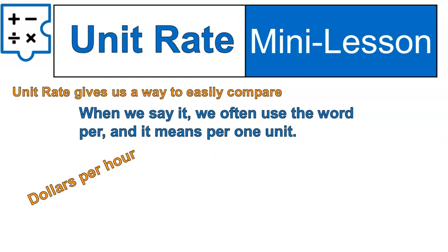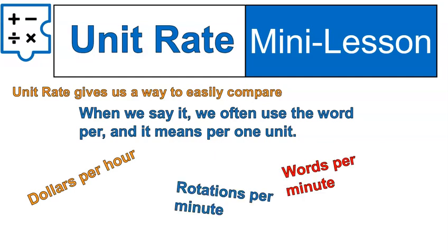When we say it, we often use the word per, and it means per one unit. For example, dollars per hour, words per minute, rotations per minute — right, RPM — miles per hour. These are just some examples where we would see unit rate in our everyday life.